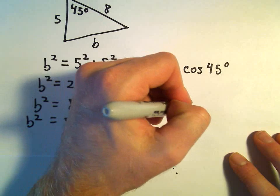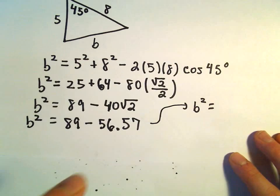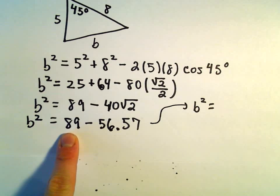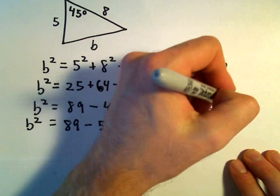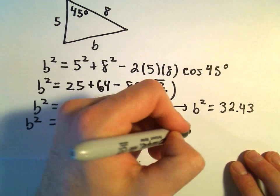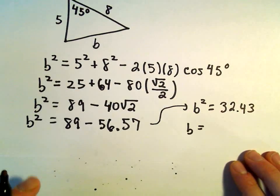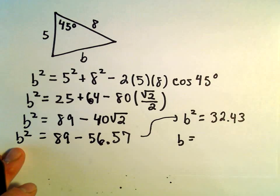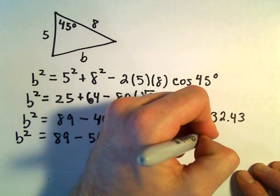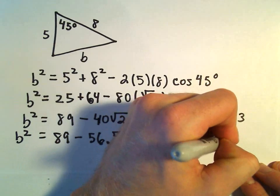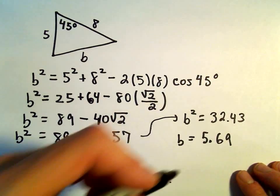Again, let's see if we can squeeze this in here. So, if we take 89 and we subtract away our 56.57, that's just going to give us 32.43. Now, all we have to do is square root both sides. Again, we'll keep the positive solution in this case. So, I'm getting this to be 5.69 after rounding.